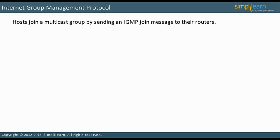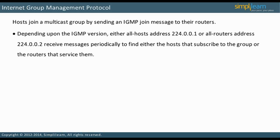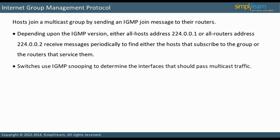Hosts join a multicast group by sending an IGMP join message to their routers. Depending upon the version, IGMP messages are sent to either the all-host address 224.0.0.1 or the all-routers address 224.0.0.2. These messages discover the routers and hosts involved in the multicast stream. Switches are also involved in IGMP. A switch uses IGMP snooping to listen for messages passing between IGMP routers and their hosts.